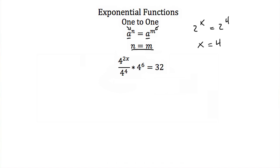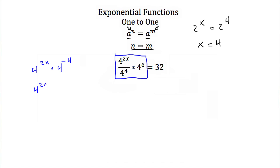Here's an example: 4 to the 2x over 4 to the 4th, times 4 to the 6th, equals 32. To solve this, first simplify the left-hand side. 4 to the 2x over 4 to the 4th can be written as 4 to the 2x times 4 to the negative 4th. Adding exponents gives 4 to the 2x minus 4. This is still multiplied by 4 to the 6th, so adding exponents gives 4 to the 2x plus 2.